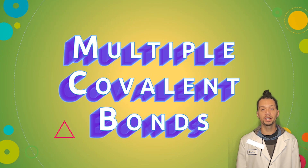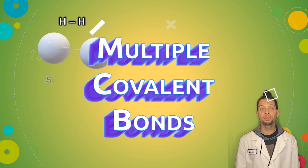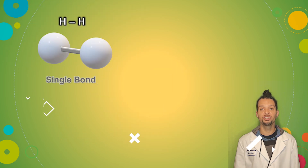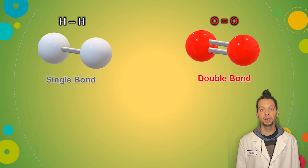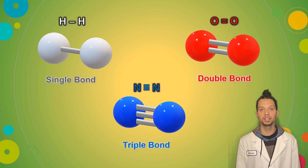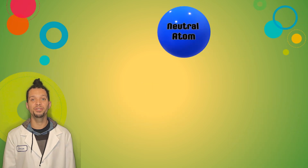Finally, there are covalent compounds that consist of multiple covalent bonds between two atoms. When an atom cannot satisfy the octet rule by sharing one pair of electrons with another atom, it will then share two or three pairs of electrons with a single atom. This results in the formation of either a double bond if two pairs of electrons are shared, like we see in the diatomic molecule of oxygen, or a triple bond if three pairs of electrons are shared, like we see here in the diatomic molecule of nitrogen.